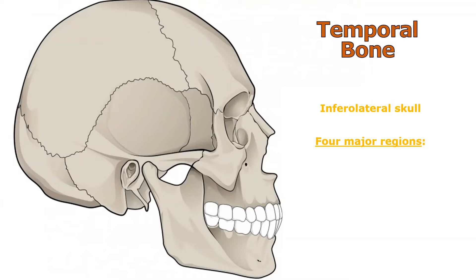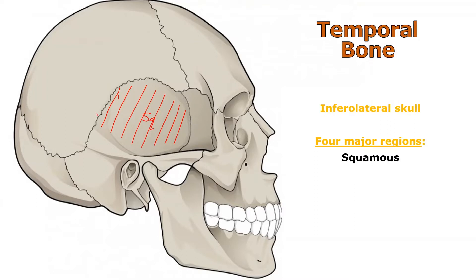Four major regions are often talked about when you mention the temporal bone. First, the squamous portion — this big flat area — that's why it's called squamous. We had a suture running along here separating the temporal bone from the parietal bone, called the squamous suture, right on the border of that squamous region. The petrous region — think of 'Petrus' or the name Peter — means rock, referring to something rocky like a rocky mountain.